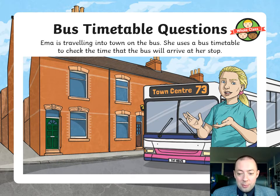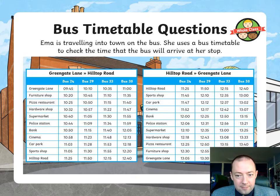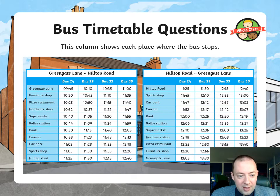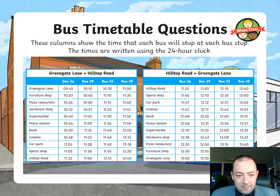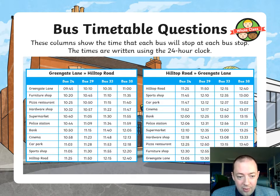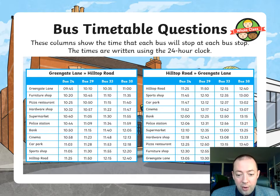I confess I find bus and train timetables quite difficult to read, but my wife actually used to write them for a living — she's very good with them. This is what they look like. These headings here show the direction the bus is travelling in, and this column down here shows each place where each bus stops. These columns show the time that each bus will stop at each bus stop. The times are always written using the 24-hour clock. So you can see bus 24 starts at Greengate Lane at 0945 — 9:45 in the morning. It goes to the furniture shop next at 1020, then the pizza restaurant at 1025, all the way through until Hilltop Road, and then back to Greengate Lane on the other side of the page. That's all bus 24, and you can see the same written for bus 29, bus 33, and bus 38.